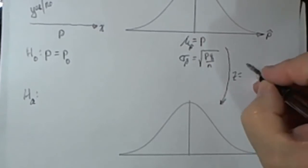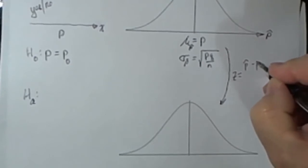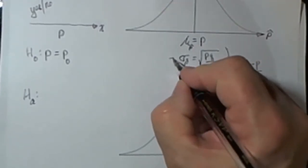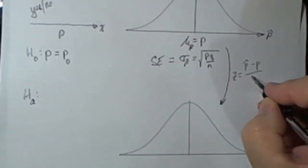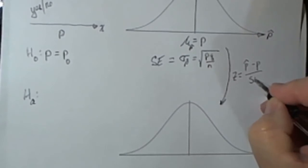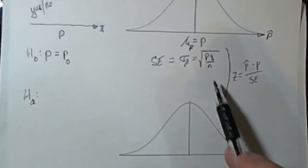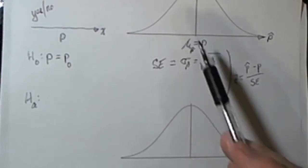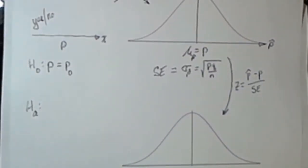Because we know the mean and the standard deviation, we can transfer any information from this distribution of sample proportions to a z-score. In particular, if we took any p-hat, minus the p-value that's here, and divide that by the standard error — the standard deviation of the distribution of the sample proportions — that z-value for our p-hat is going to be our test statistic, and we'll use that in calculating the p-value.